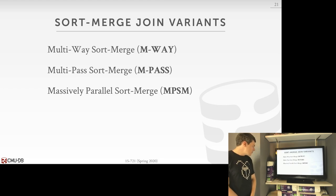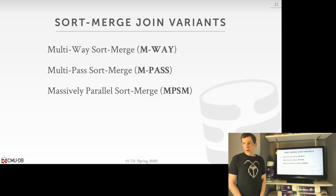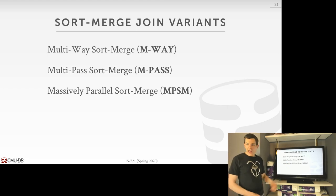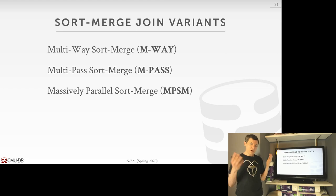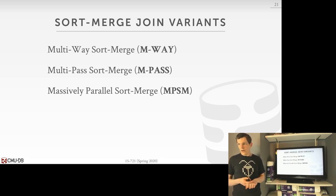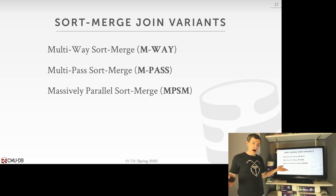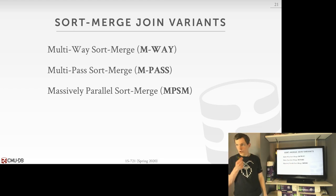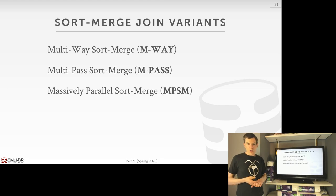There are three different approaches to the merge phase. The first two are from the ETH paper assigned for reading. The third is from the HyPer group, who published a 2012 paper claiming sort-merge joins beat hash joins, but then the following year switched entirely to hash joins. The ETH paper shows that the HyPer approach gets crushed by the first approach here — the multi-way sort-merge join. We'll go through each one by one and look at performance numbers.